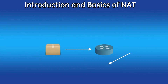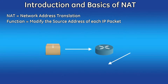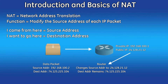NAT stands for Network Address Translation. Its function is to modify the network address located in an IP header that gets sent across a routing device. The specific address being modified in each packet is the source IP address, or where the packet originated from. This is also known as masquerading.